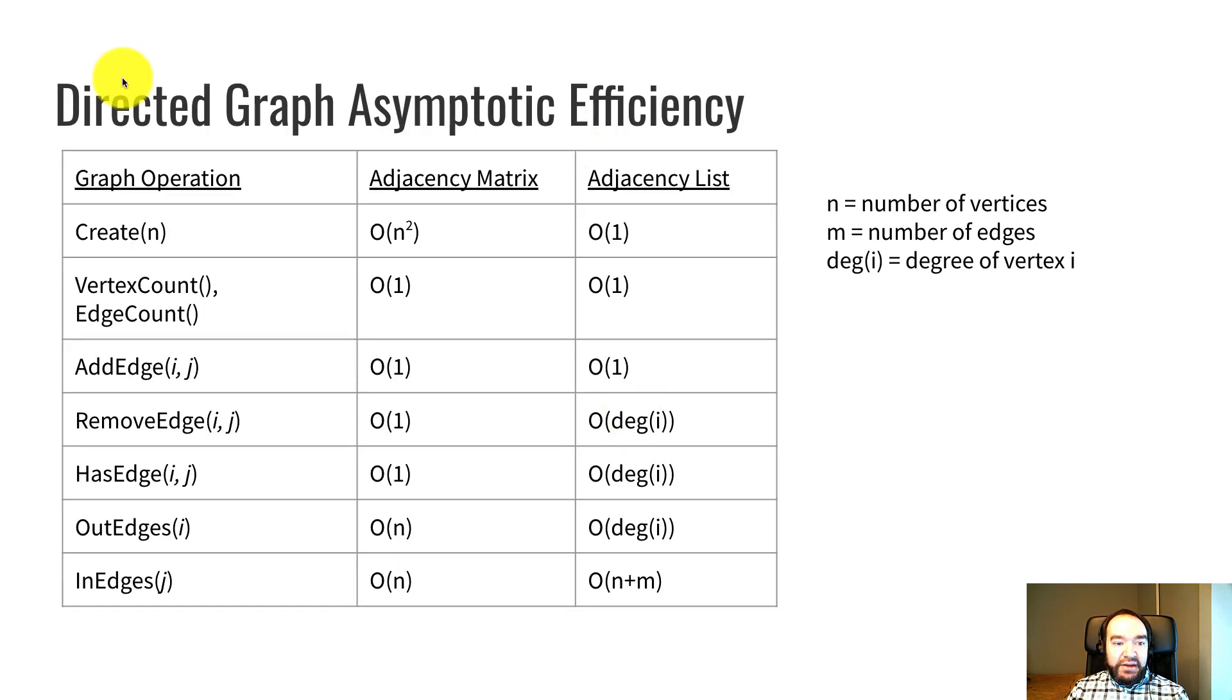So that is the adjacency matrix data structure. And as it says here, creating takes quadratic time big O of n squared. That's pretty slow, but once you get past that, it speeds up. Vertex count and edge count are constant time accessors. Adding an edge, removing an edge, has edge. Those are all constant time. Those are very fast.